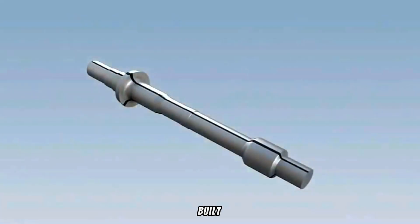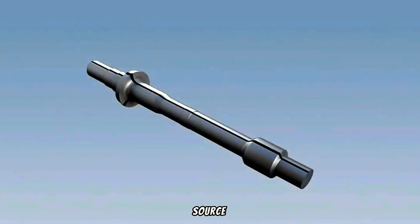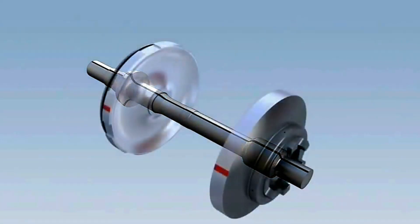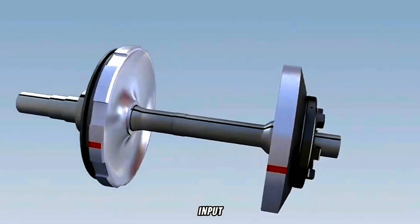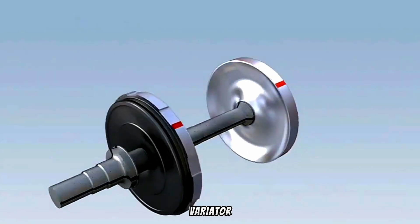The variator is built around a shaft, which is driven by a power source, for instance an engine or motor. Two input discs are fixed on the shaft, one at each end of the variator.